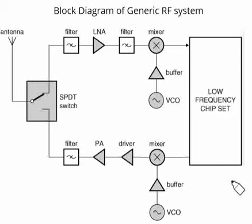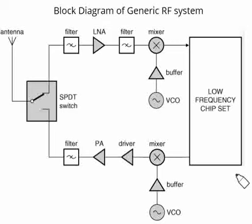When we look at the transmit section of the RF system, first of all we will have a microcontroller or a processor which is generating the data. This data is given to a digital-to-analog converter, because the data that we are transmitting out is in analog form, whereas the data generated from the microcontroller is a digital signal. So we have something called a DAC.